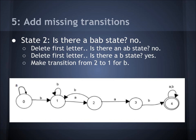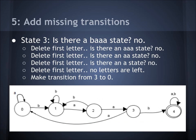For state 2, you would need BAB. Is there a BAB state? No. Delete the first letter — is there an AB state? No. Delete the first letter again — is there a B state? Yes. You make a transition from state 2 to state 1. For state 3, is there a BAAA state? No. Delete the first letter — is there an AAA state? No. Delete again — AA state? No. Delete again — is there an A state? No. Delete again — no states left, so you make a transition from state 3 to state 0. And that would be the end of that machine.